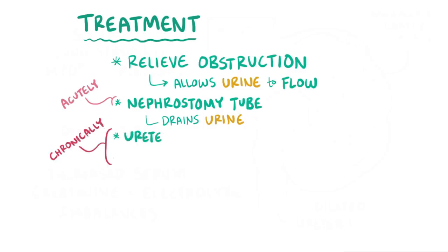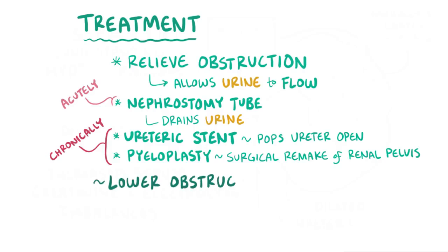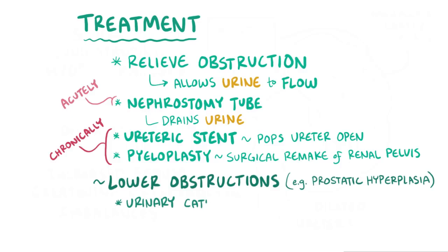Chronically, somebody could have a ureteral stent, which pops the ureter open, or a pyeloplasty, which is a surgical remake of the renal pelvis. Lower urinary tract obstructions, like prostatic hyperplasia, can be treated with the insertion of a urinary catheter that keeps the urethra open, or a suprapubic catheter that causes bladder decompression.